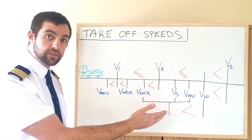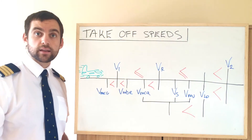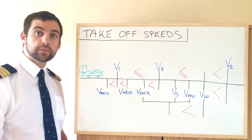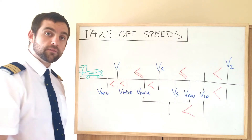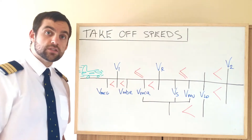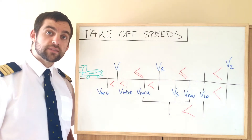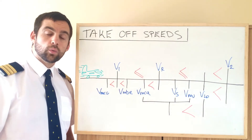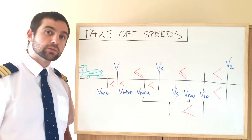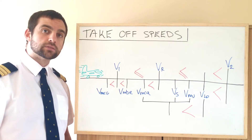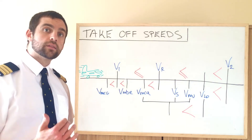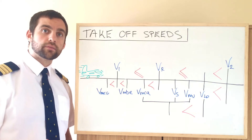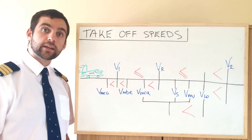Next, VLO — lift-off — as it says in the name, the speed at which the aircraft will lift off the ground. And the big one, V2. V2 is the takeoff speed, or one engine inoperative max angle speed — it's very close to that in most aircraft. It's the speed which needs to be achieved by 35 feet above the runway in the takeoff configuration.